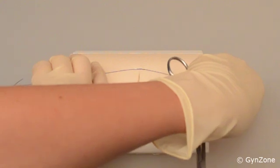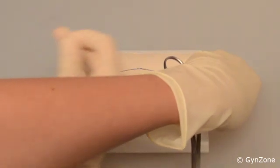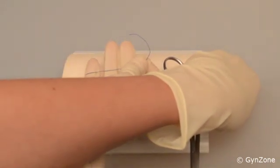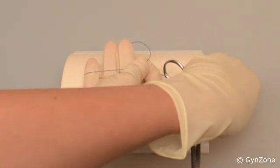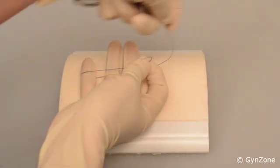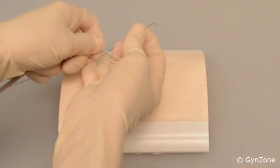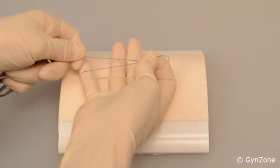Keep the short end between your thumb and index finger, and rotate your hand until the palm faces upwards, and the suture lies across the 3rd to the 5th finger. Also place the long end of the thread across these fingers, without releasing the thread from the non-dominant hand.